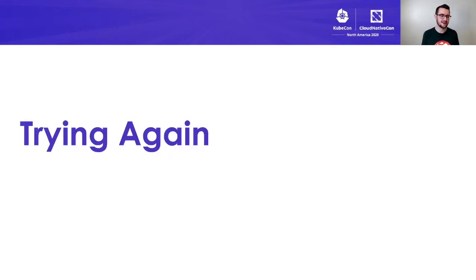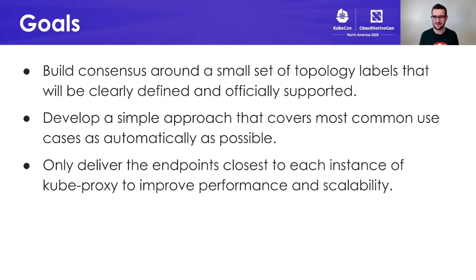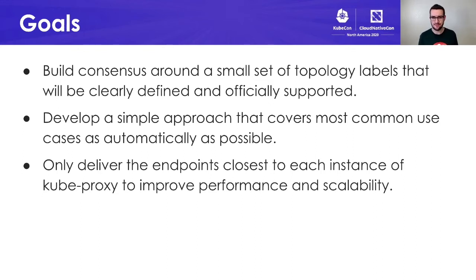So with that background, we said maybe we should try again. In our second attempt, we wanted to identify three goals. First, we wanted to build consensus around a small set of topology labels that would be clearly defined and officially supported. We wanted to develop a simple approach that covered the most common use cases as automatically as possible. And finally, we wanted to only deliver the endpoints that each node would actually care about instead of continuing to deliver all endpoints to all instances of kube-proxy. We thought this would make a very significant difference for both scalability and performance.